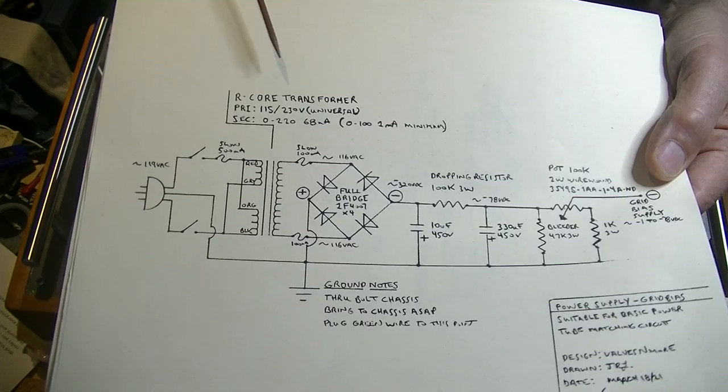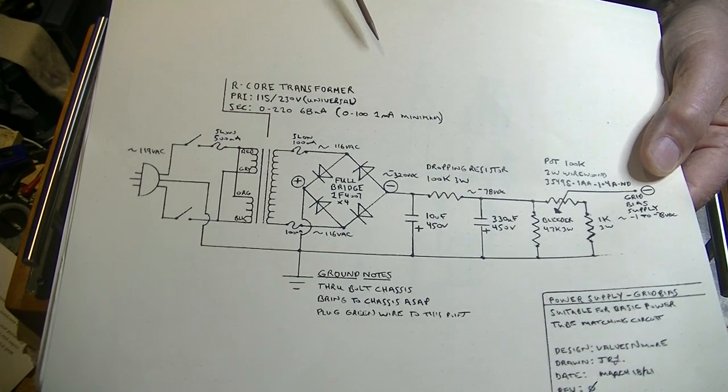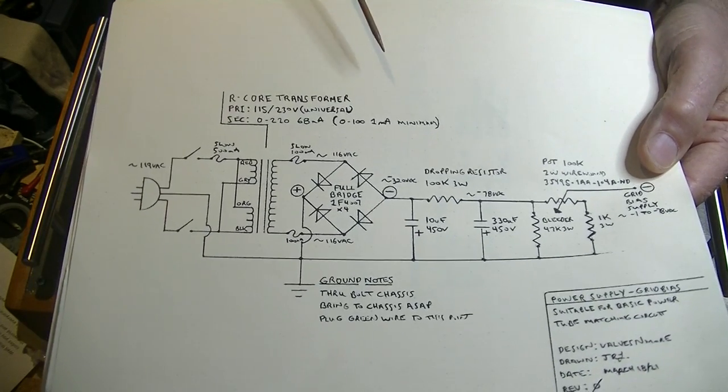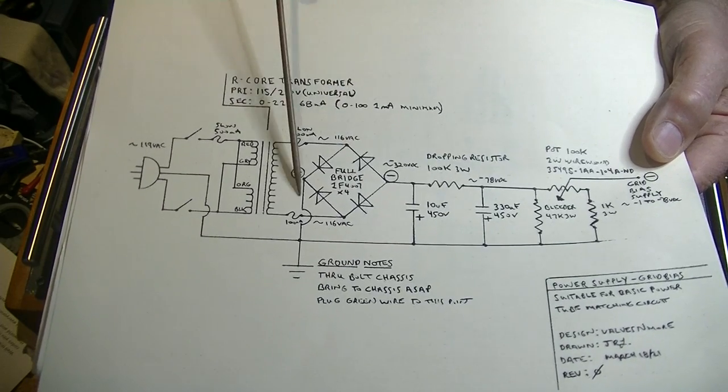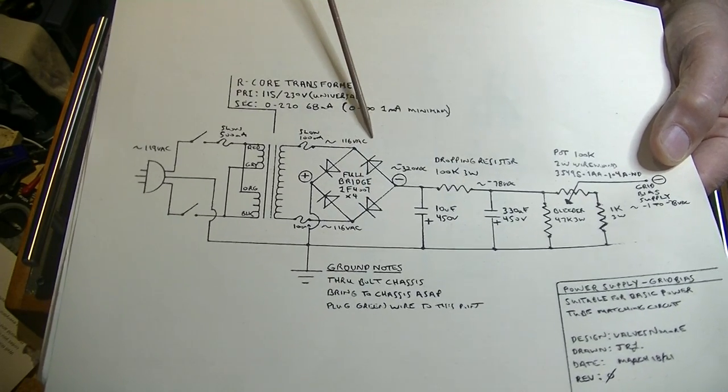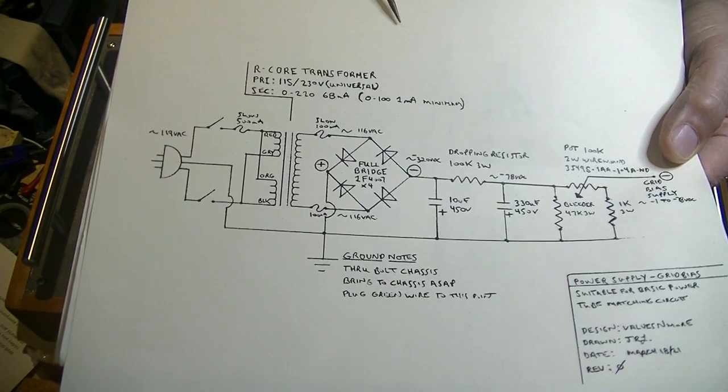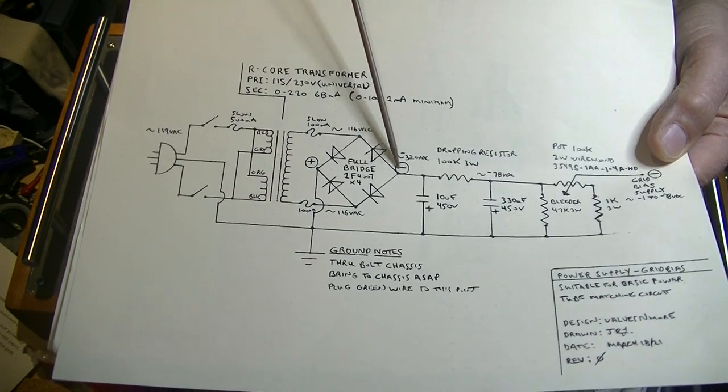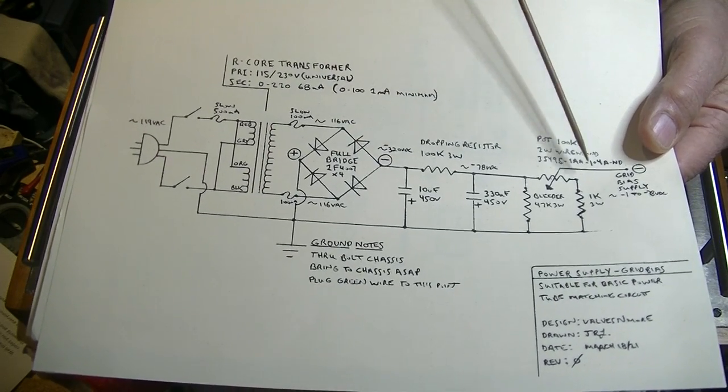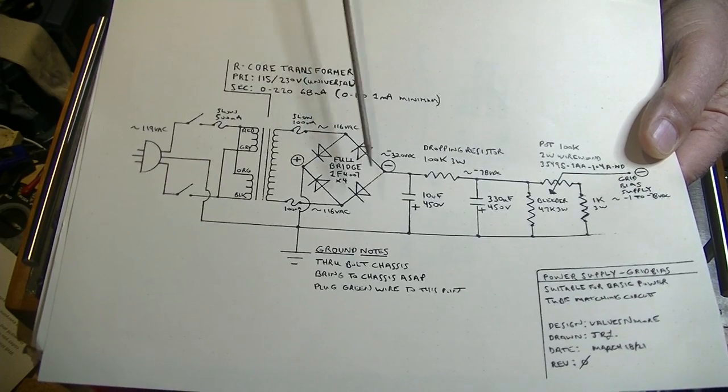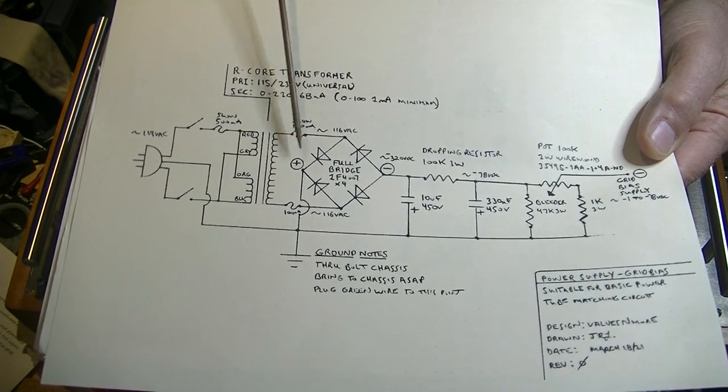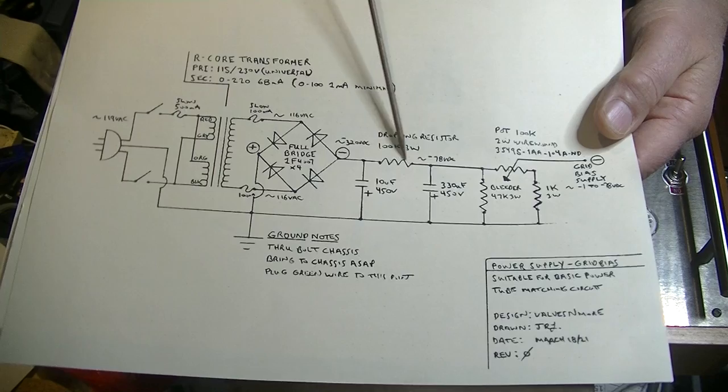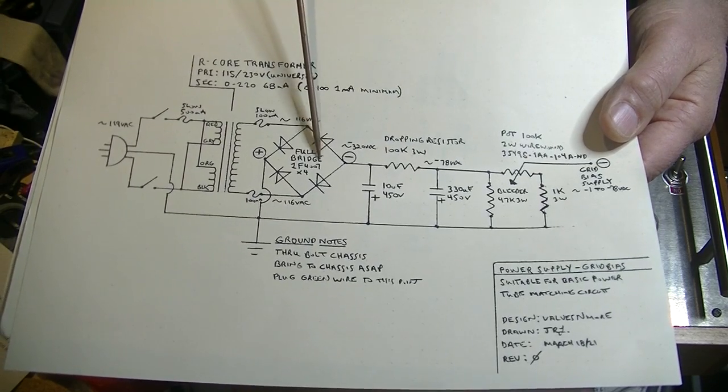Okay, let's take a look at the bias supply. Now if you're familiar with my drawing of the power supply for the 6 or 12 SN7 tube pre, you might say to yourself aren't those rectifiers all facing in the wrong direction? Well you'd be exactly right, they are. This is a full bridge. And normally the negative would be on this side here going straight to ground, and the positive would be going up to the positive rail. You flip the whole thing over.